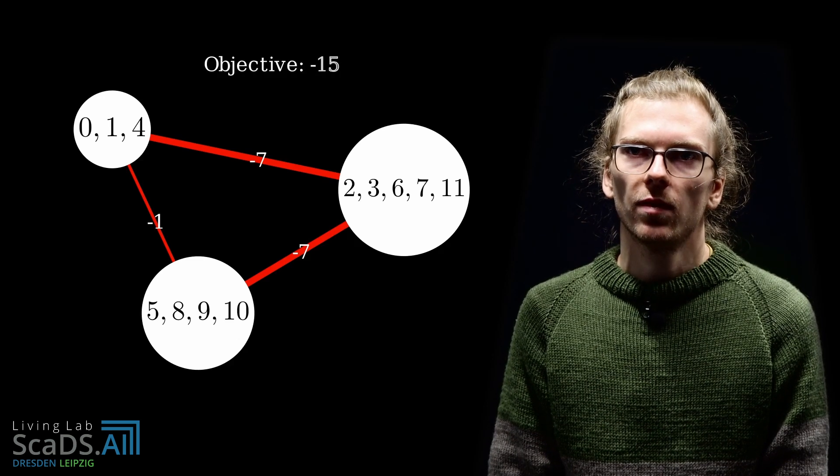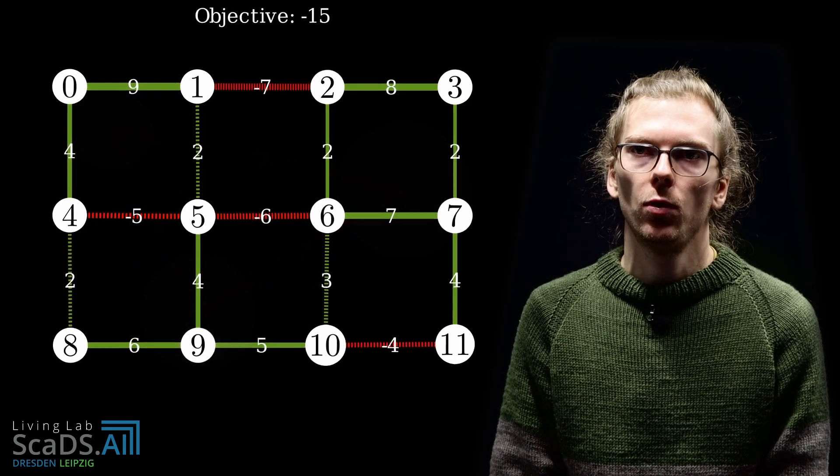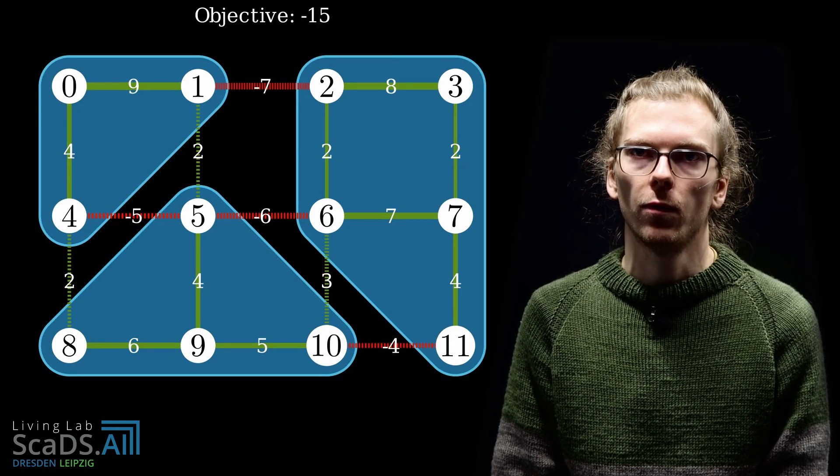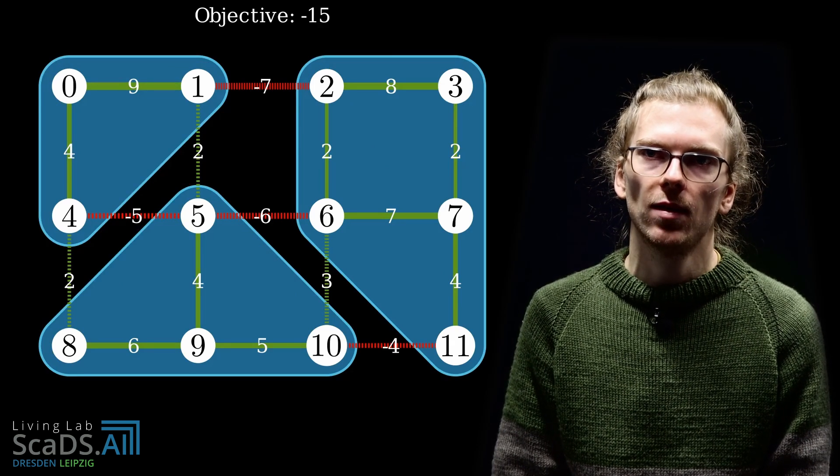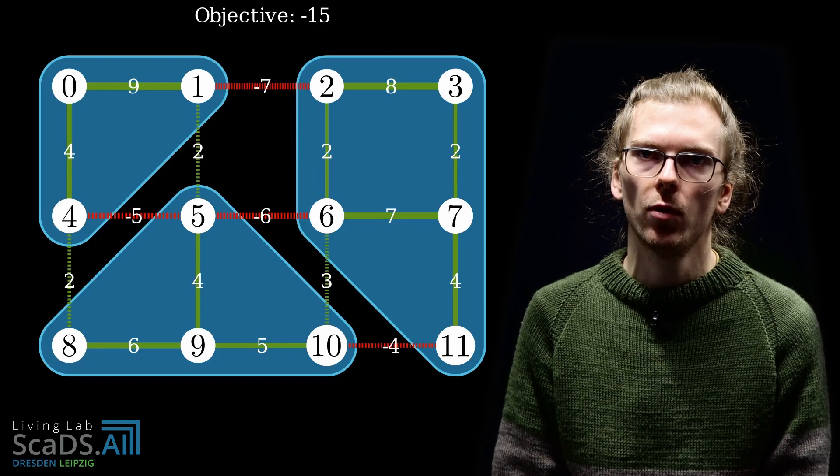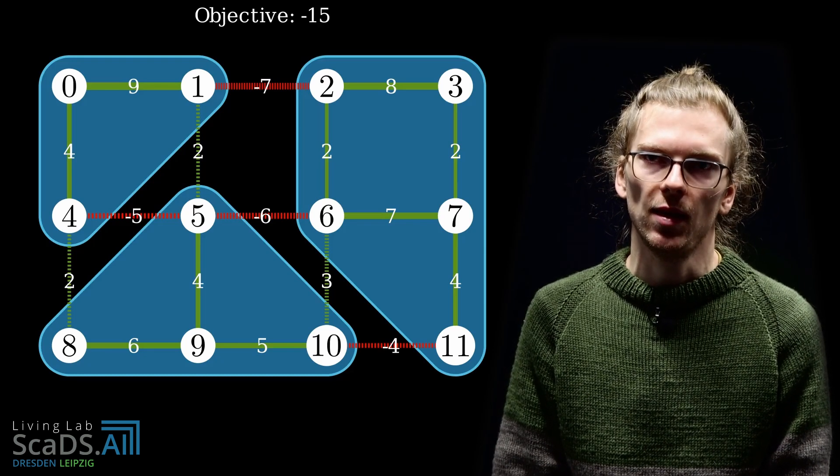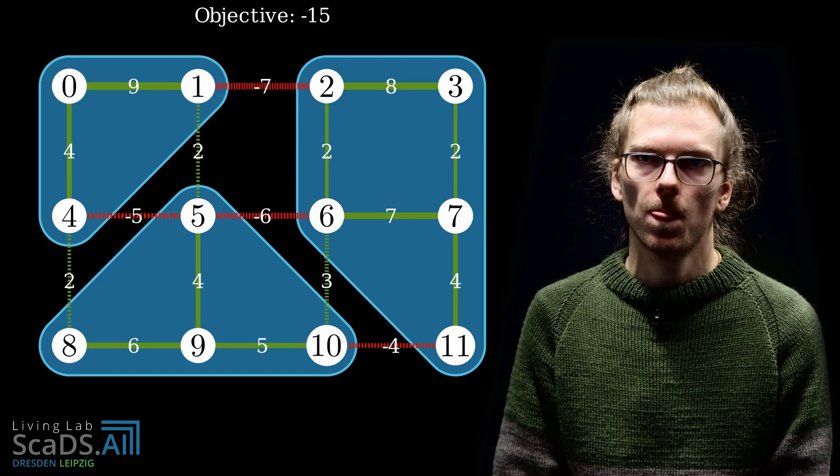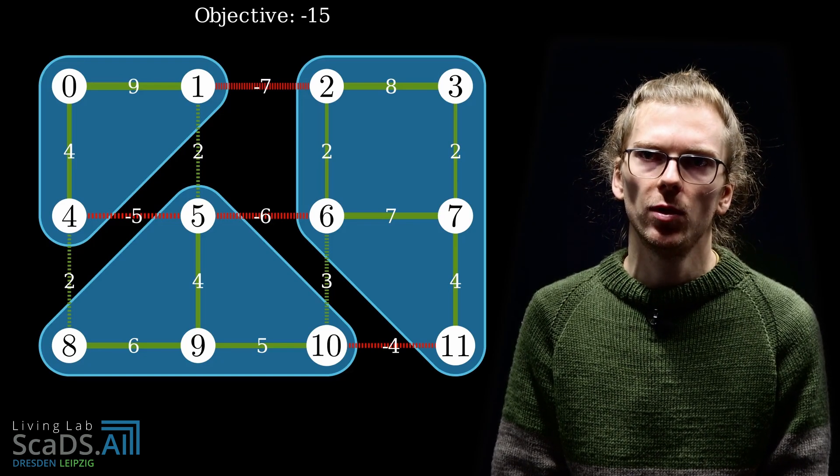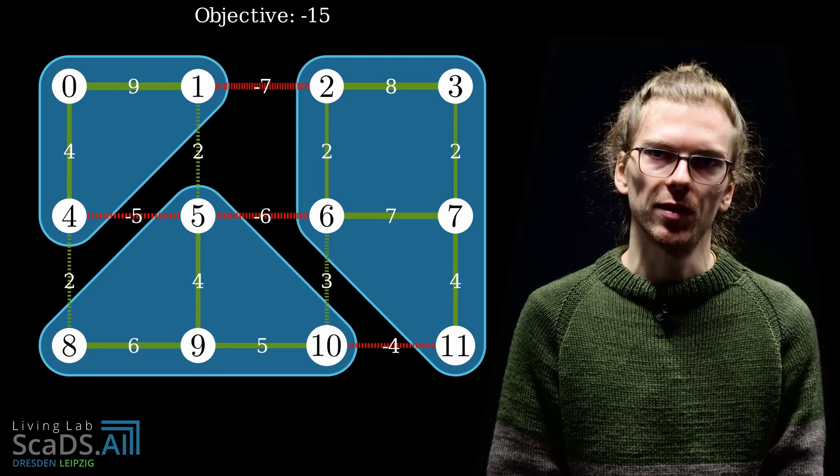In this example, the algorithm has computed the solution where vertices 0, 1 and 4 form one component, 5, 8, 9 and 10 form another component and 2, 3, 6, 7 and 11 form the last component. If you recall, this is the optimal solution that we have seen previously. The contraction operation that is performed in each iteration can be implemented very efficiently such that the greedy algorithm solves even large instances in a reasonable amount of time in contrast to the integer linear program solver we have seen before.